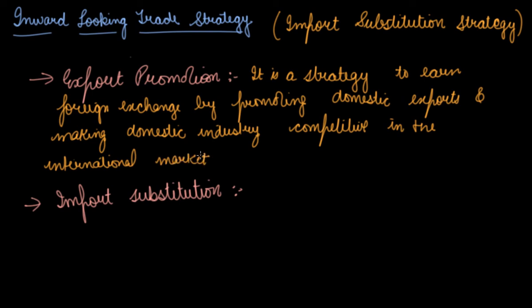The idea was to establish domestic industry and produce in India the finished goods that used to be imported from the rest of the world. India's domestic industry would export goods to the rest of the world — we would be the exporter of finished goods, not the importer. This was the first principle of the inward looking trade strategy.